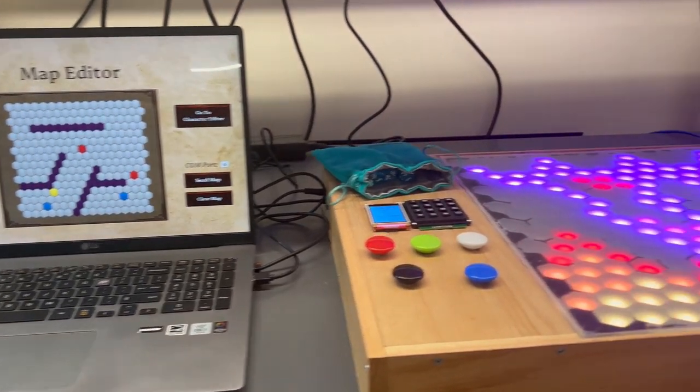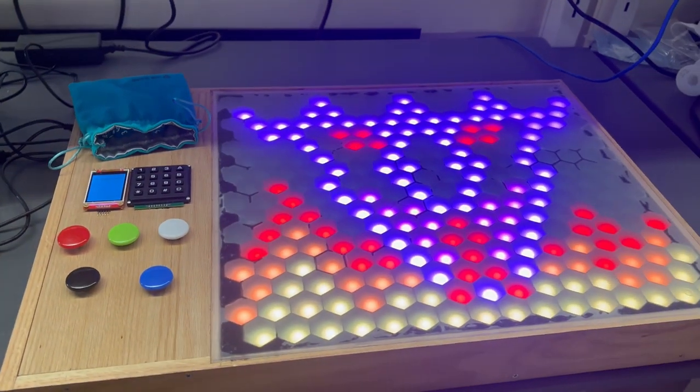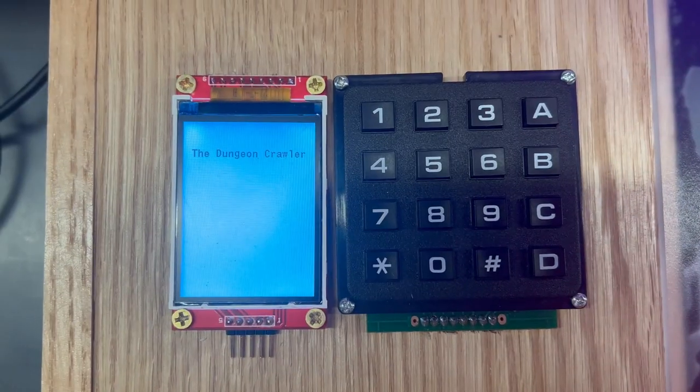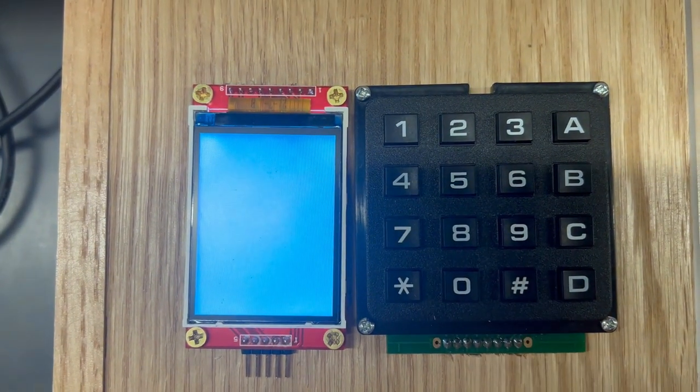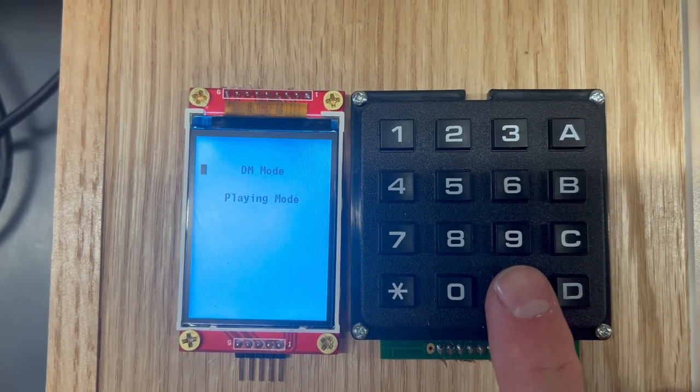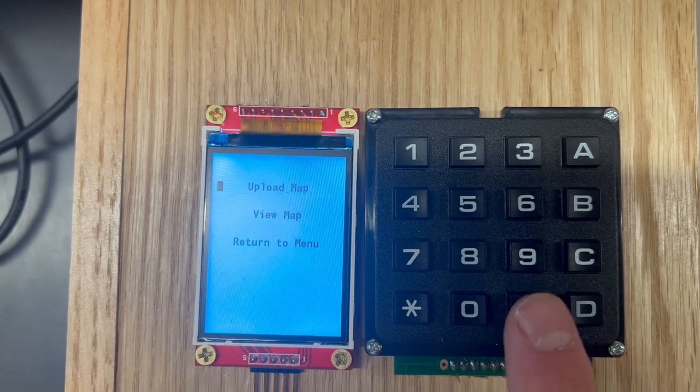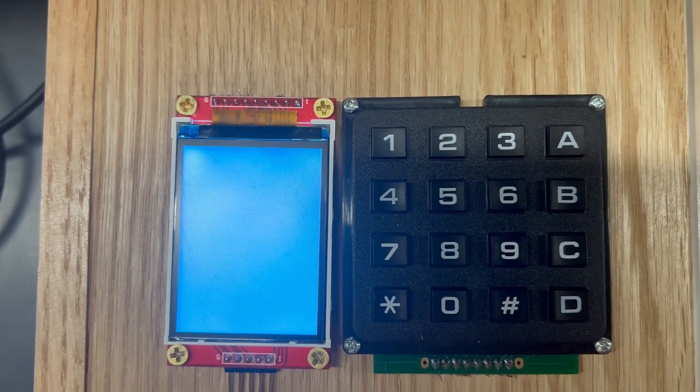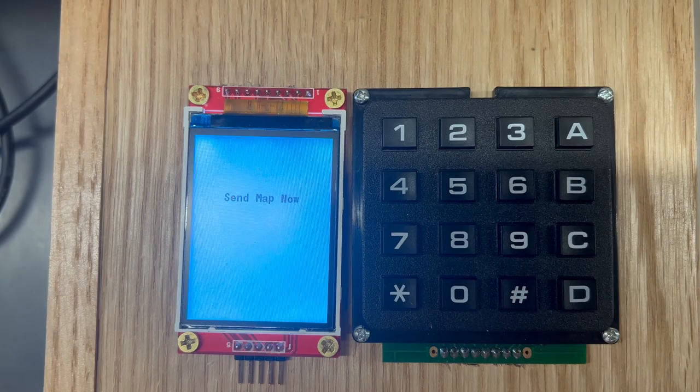We are team one. This is the dungeon crawler. First, we enter the dungeon. Now to set up the game, we go into DM mode, then select upload map. It will then look for a USB connection and ask you to send the map on the application.